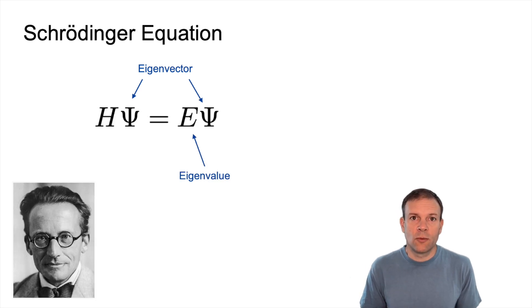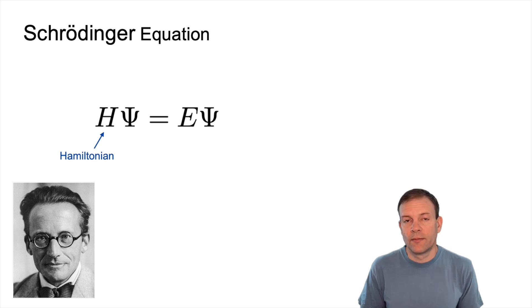Now going back to the Schrödinger equation, we have H, which is a Hamiltonian, which takes as input the 3D positions of the atom's nuclei and its electrons, and it computes the interaction between them.